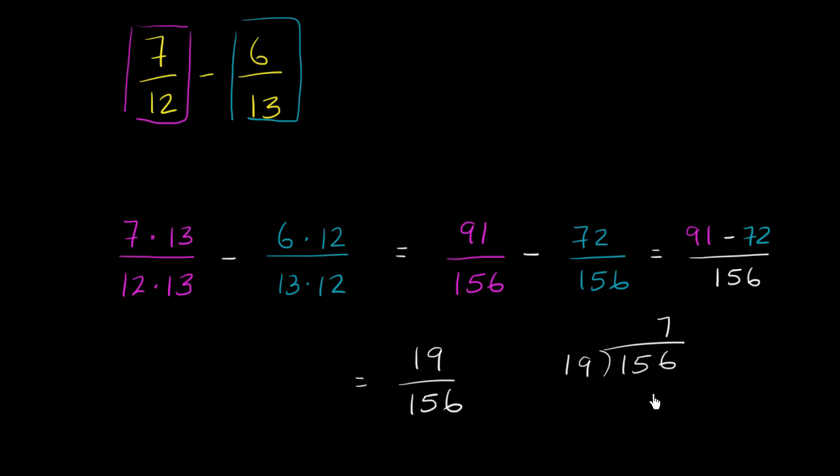Let's see, so let's do it 8 times. 8 times 9 is 72. 8 times 1 is 8, plus 7 is 15. Yeah, you have a remainder here. So this doesn't go evenly. This isn't divisible by 19. And they don't share any other common factors, so we've simplified it about as much as we can. This is equal to 19 over 156.